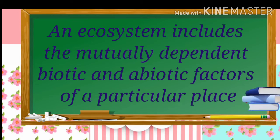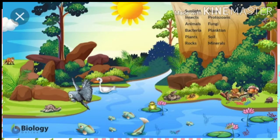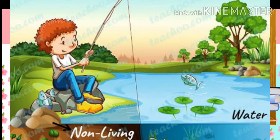Children, look at your textbook page number 13. Here you can see a beautiful forest. Forest is an ecosystem. Many organisms like huge trees, tiny plants, animals, birds, insects, and many others live in the forest.